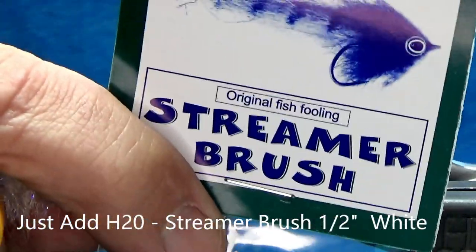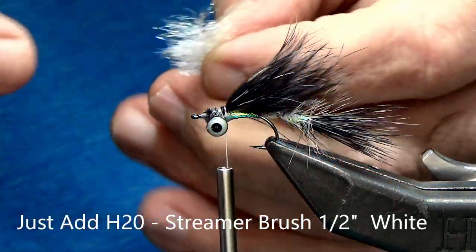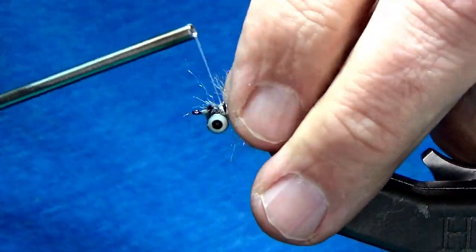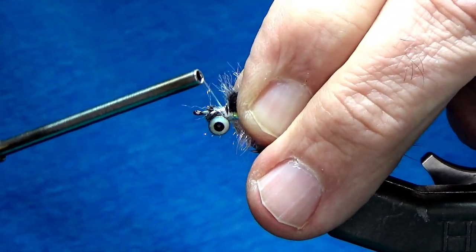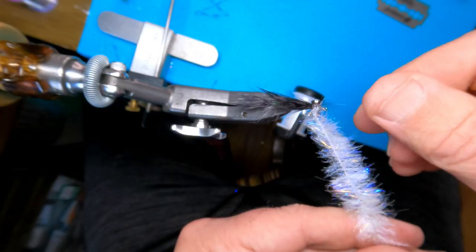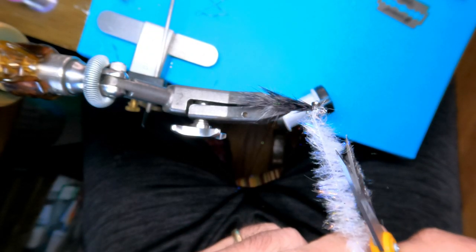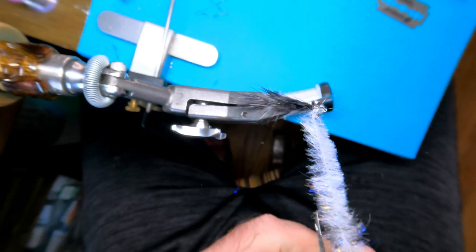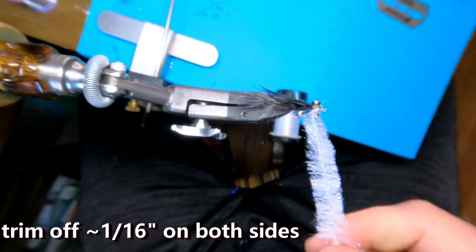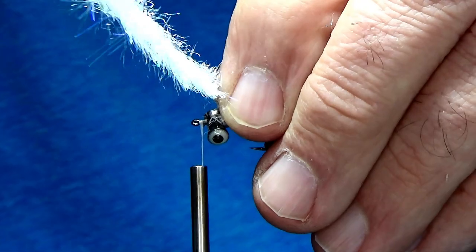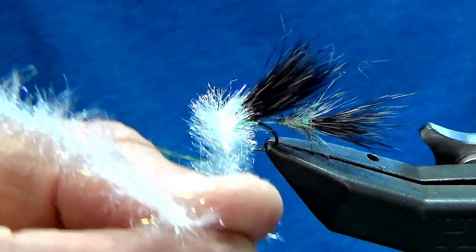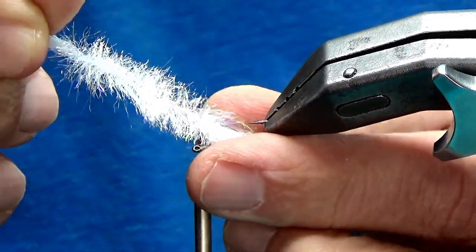The last part of this fly is going to use a streamer brush from Just Add Water. It's half an inch, and the color is white. And I'm going to put the brush in. I'm going to lash it down nice and tight. And I'm going to do a little bit of trimming on this brush. And the reason why I trim here is because I found if I use the whole amount of the brush, it's too much. So I'm just clipping off maybe a sixteenth of an inch. Maybe just a small, small amount. I'm going to pull that brush back, just trying to cover everything.